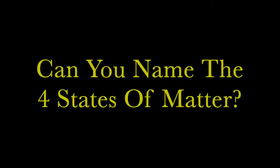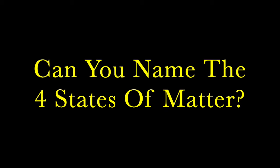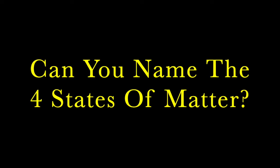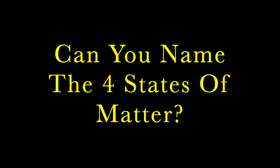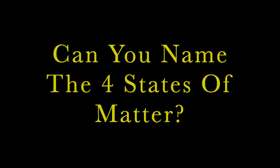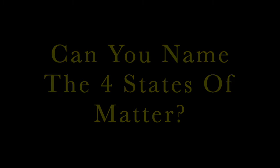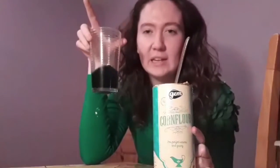Okay, so now we're going to make a non-Newtonian fluid. Can you think of the four states of matter? Solid, liquid, gas and plasma. So today we're going to combine a solid, which is just corn flour, with some liquid, which is just water with some green food dye in it.